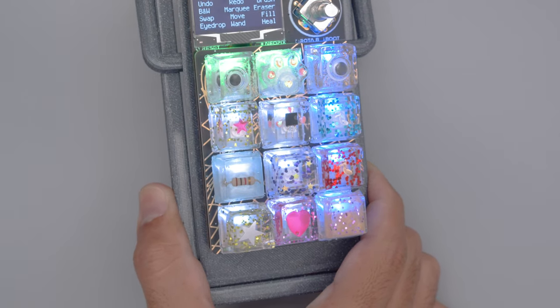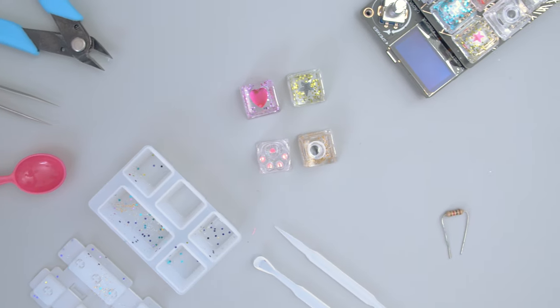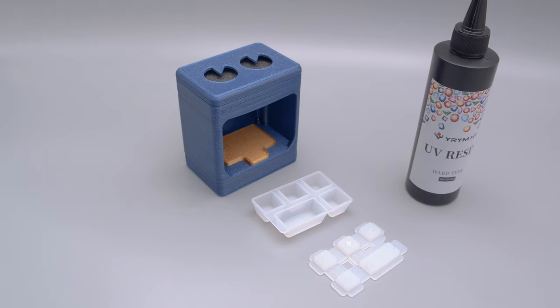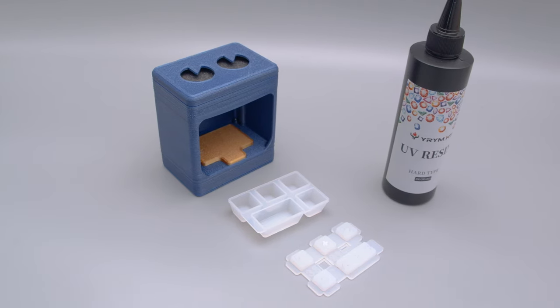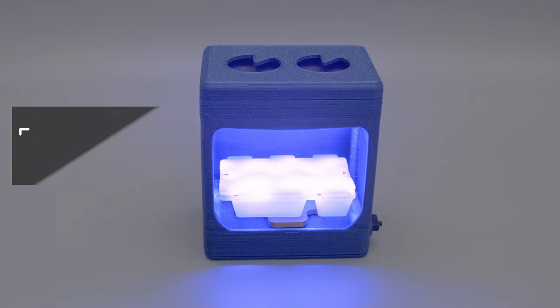You can make your own set of keycaps with silicone molds and UV curable resin. To keep it simple, all you really need is the keycap molds, some UV resin, and a UV lamp for curing. We designed and 3D printed our own mini UV lamp which is just the right size for these silicone molds.